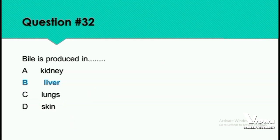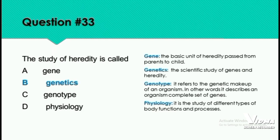Question 32: Bile is produced in the kidney, liver, lungs, or skin? Bile is produced in our liver — option B is correct. Question 33: The study of heredity is called genetics. Genes are the basic unit of heredity passed from parents to children. Genetics is the scientific study of genes and heredity. Genotype refers to the individual's collection of genes. Physiology is the study of different body functions and processes.